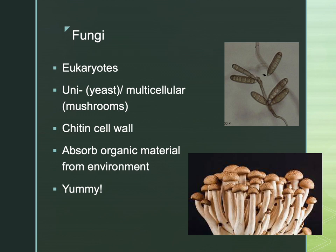Next up we have fungi — another eukaryote. Not all fungi are microscopic: they can be unicellular, like yeast, which are absolutely microscopic, or multicellular, like mushrooms, which we're able to see with the naked eye. Fungi have chitin in their cell wall, which helps with the structure of the cell wall and gives the cell its shape. Fungi are really good at absorbing different types of organic material from the environment to use for energy.